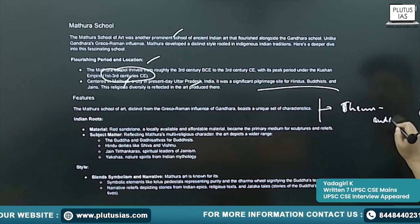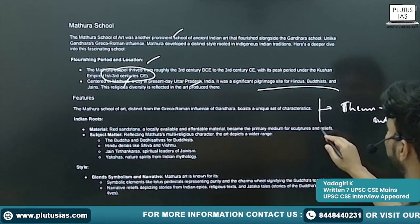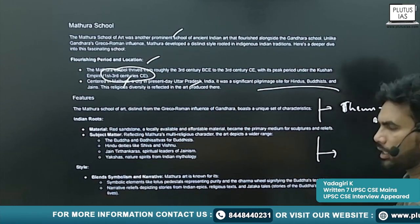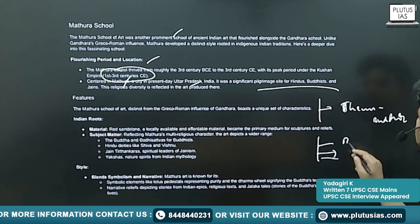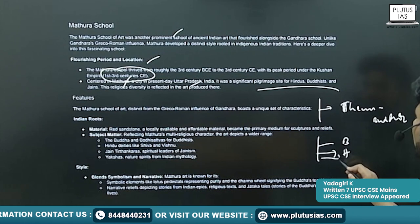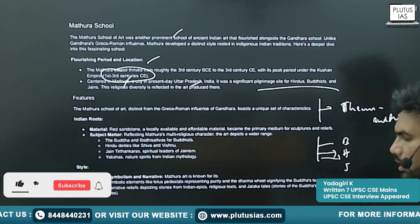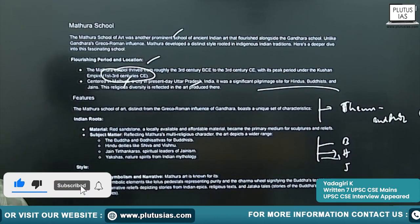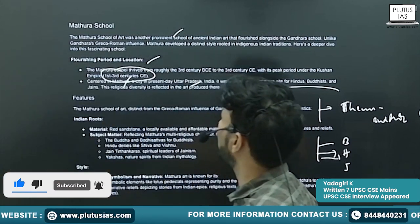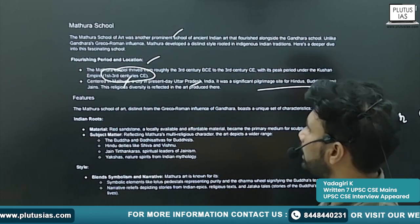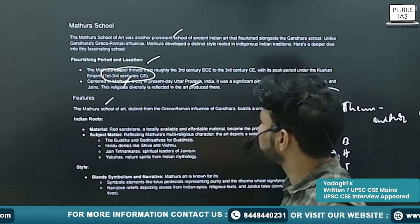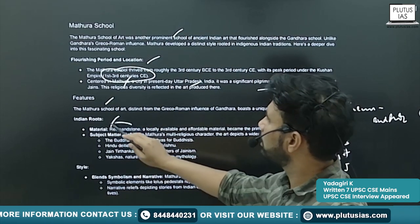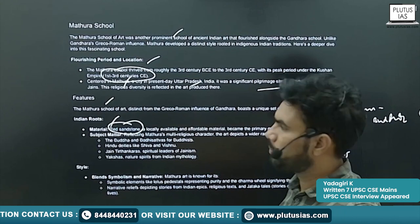But in the Mathura School of Art, you will find sculptures of three dominant religions at that time — Buddhism, Hinduism, and Jainism. All sculptures relating to all three religions you will find in the Mathura School of Art.